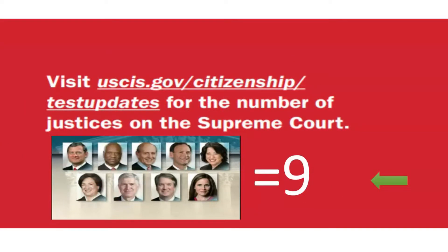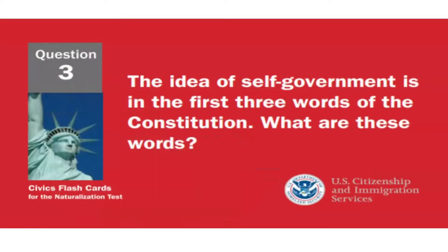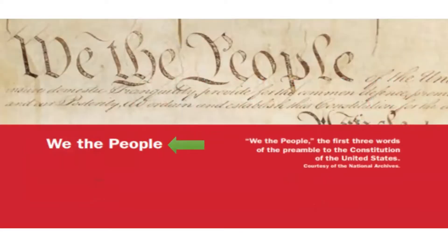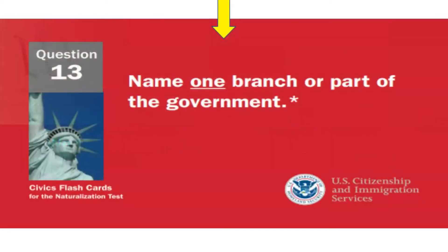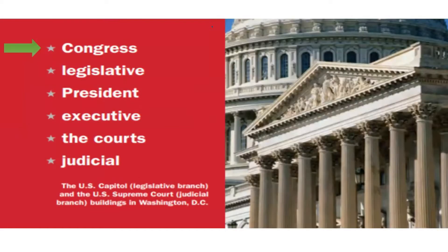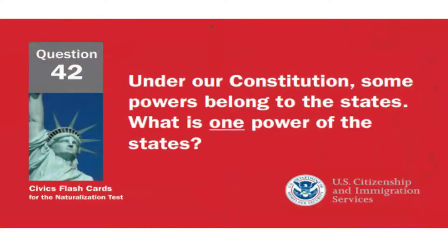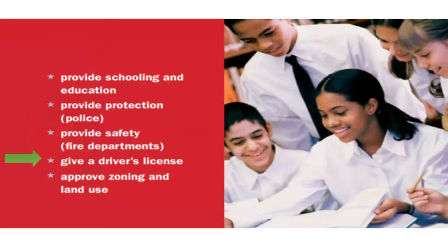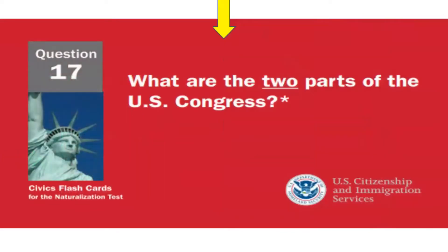How many justices are on the Supreme Court? Nine justices. The idea of self-government is in the first three words of the Constitution — what are these words? We the People. Name one branch or part of the government. Congress. Under our Constitution, some powers belong to the states — what is one power of the states? Give a driver's license.